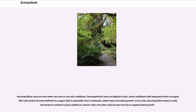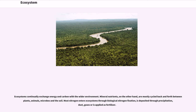Ecosystems continually exchange energy and carbon with the wider environment. Mineral nutrients, on the other hand, are mostly cycled back and forth between plants, animals, microbes and the soil. Most nitrogen enters ecosystems through biological nitrogen fixation. Nitrogen is also deposited through precipitation, dust, gases or is applied as fertilizer.